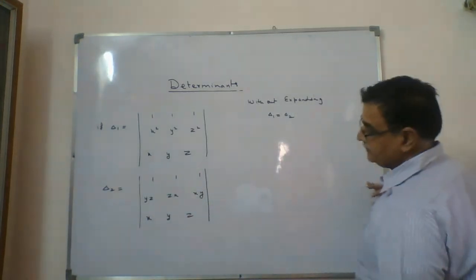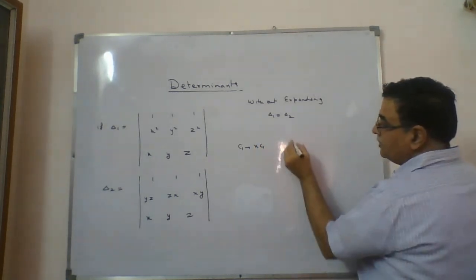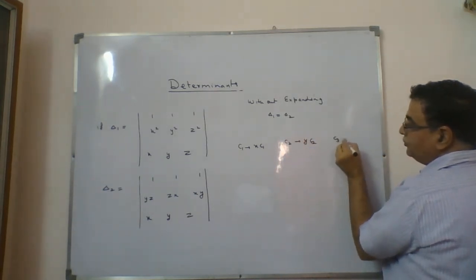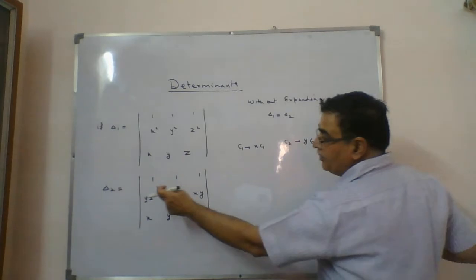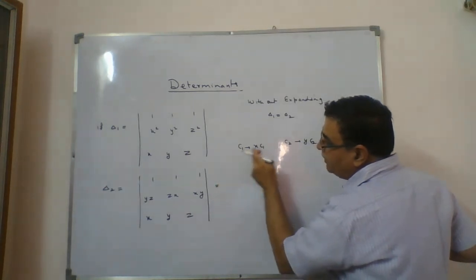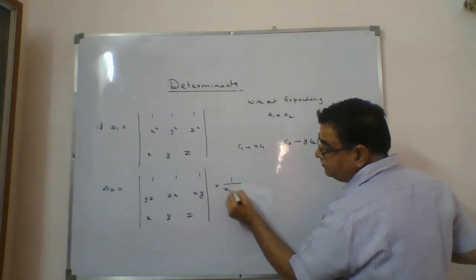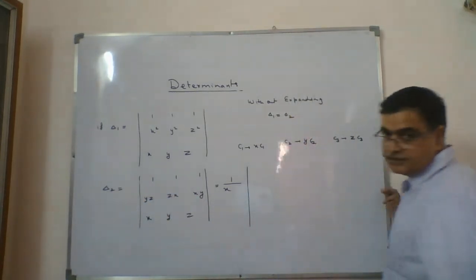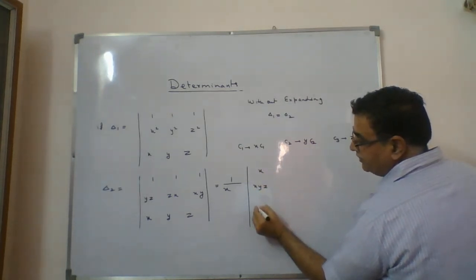Column 1 I will multiply by x, column 2 I will multiply by y, and column 3 I will multiply by z. As you are multiplying a single column, you must also divide by the same value to compensate. So when column 1 is multiplied by x, you take 1/x outside — that is the extra term you are taking.